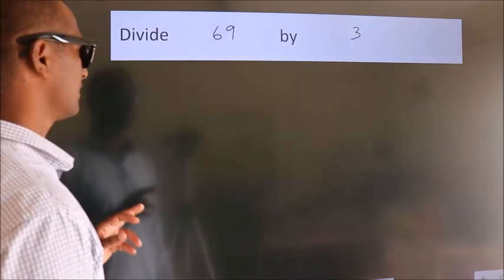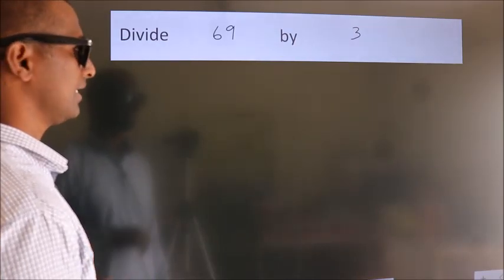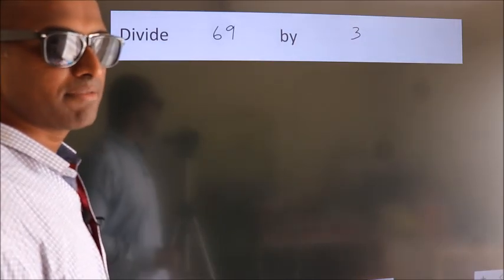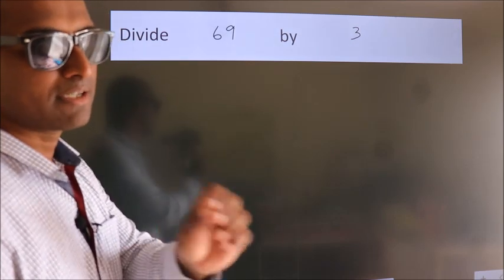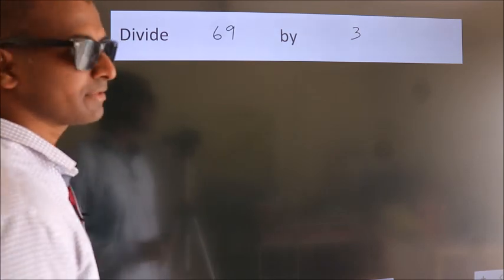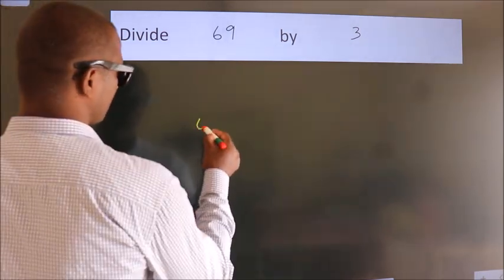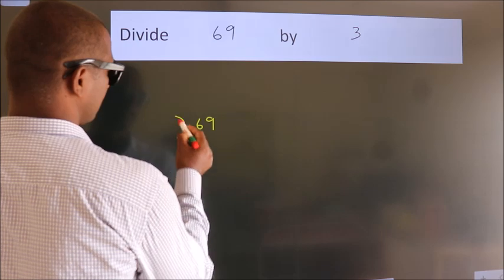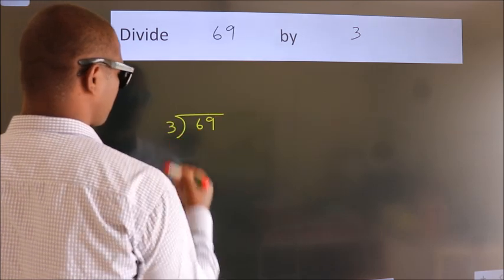Divide 69 by 3. To do this division, we should frame it in this way: 69 here, 3 here.